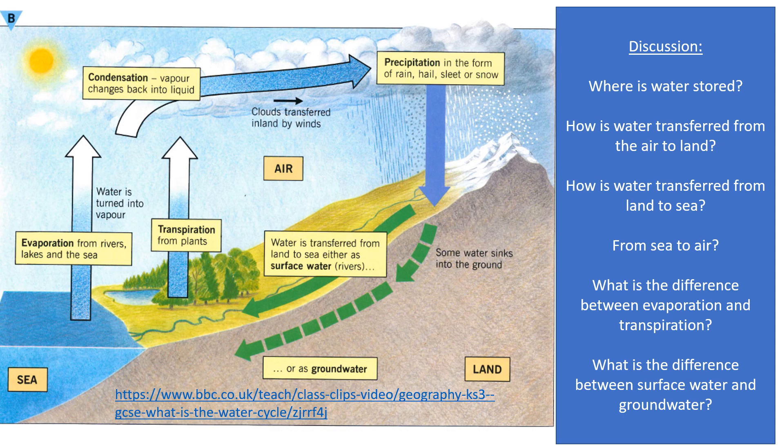Next question: how is water transferred from air to land? That's through a process called precipitation. Precipitation is a proper geography word for anything wet falling from the sky — so it could be rain, hail, sleet, or snow.